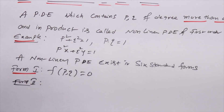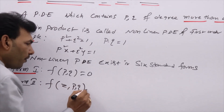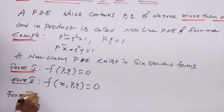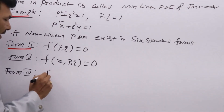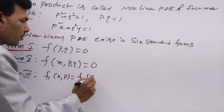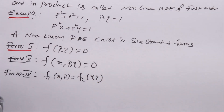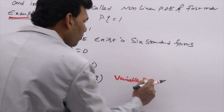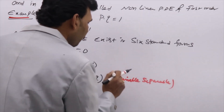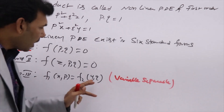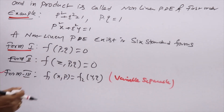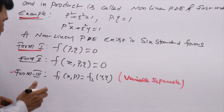Form 1 is f(p, q) = 0 — you won't find z, x, or y in it. Form 2 has z also: f(z, p, q) = 0. Form 3 is the variable separable form: f₁(x, p) = f₂(y, q) — here x and p are on one side and y and q are on the other side.